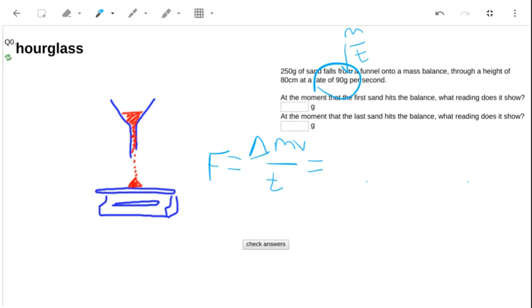So the equation simply reduces to 90 grams per second multiplied by the velocity that the sand falls. So let's just quickly get that.